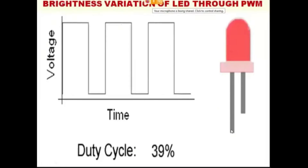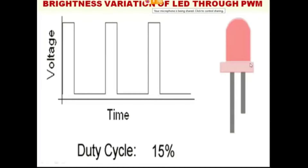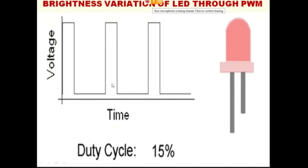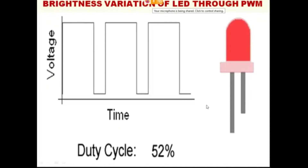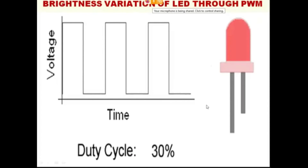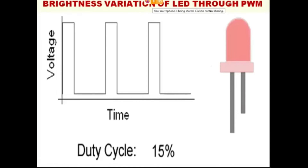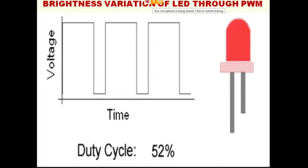Now look at the screen: if the width increases, brightness of the LED increases; if the width decreases, brightness of the LED decreases. This is how the intensity and contrast control in the mobile phone is also working.